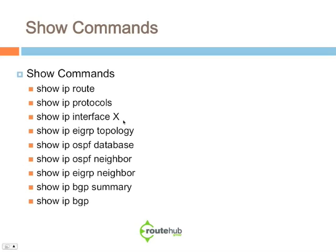For BGP, you can do ShowIPBGP Summary to view all BGP peers and details about your autonomous system, your version number, and so on. You can also use ShowIPBGP to view route information learned via BGP from peers, whether external or internal.